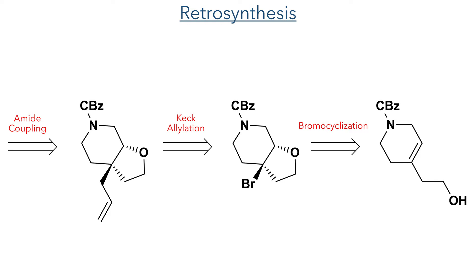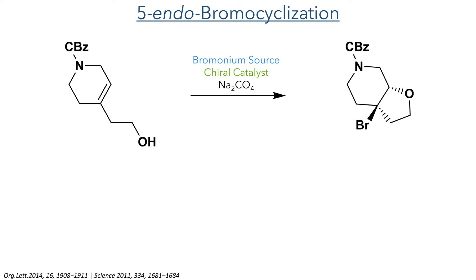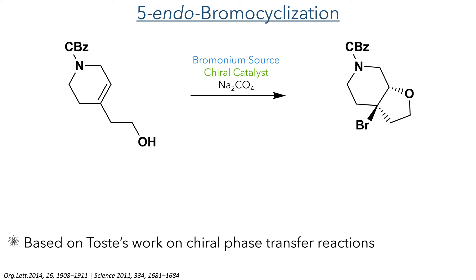So let's start with this cyclisation. This reaction is a 5-endo cyclisation, which is favoured according to Baldwin's rules, as we saw in the video on rules for ring closure. To carry out this reaction they needed a source of bromonium ions, a chiral catalyst to ensure enantioselectivity, and sodium carbonate which acts as a base. This enantioselective bromocyclisation was based on Toste's work on chiral anions in phase transfer catalytic reactions.